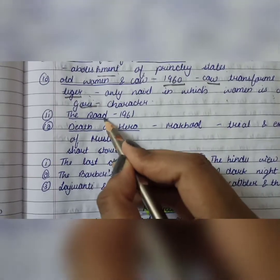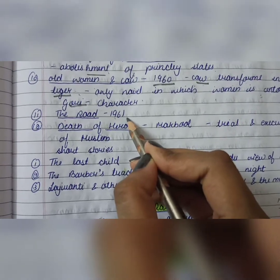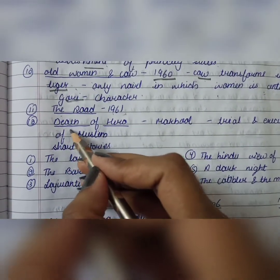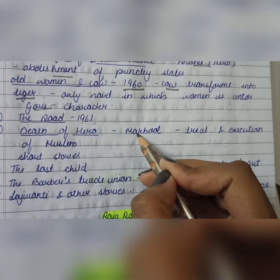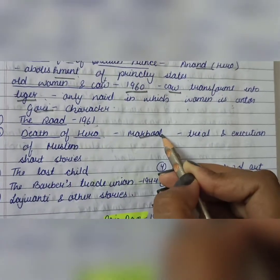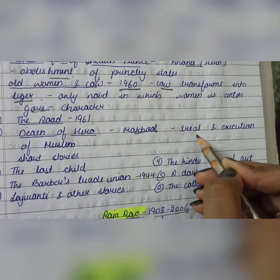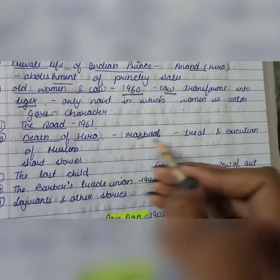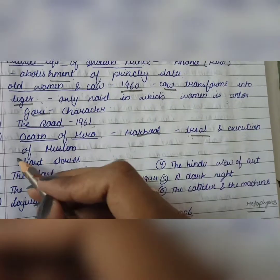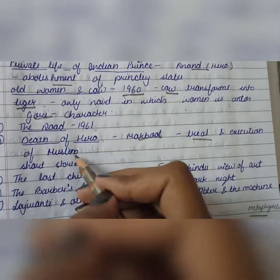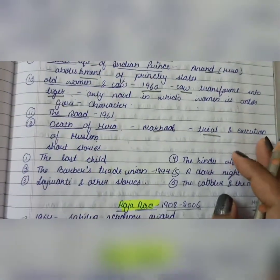The Road was published in 1961. Next is Death of a Hero, whose main character is Maqbool. It depicts how Maqbool goes through trial and execution.